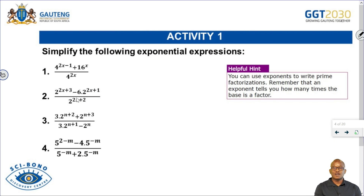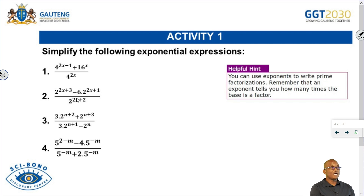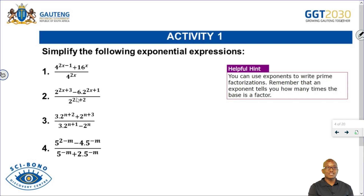Let's look at our first activity. The first activity says simplify the following exponential expressions. You can see we have four activities to do. There is a helpful hint box which reads: you can use exponents to write prime factorization. Remember that an exponent tells you how many times the base is a factor.